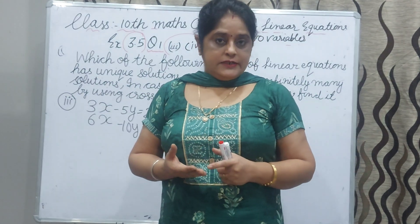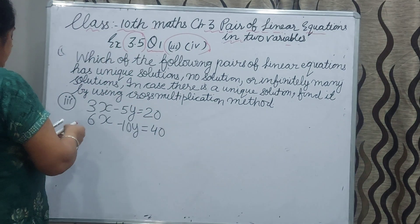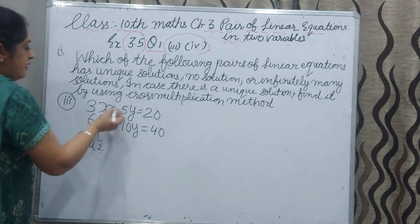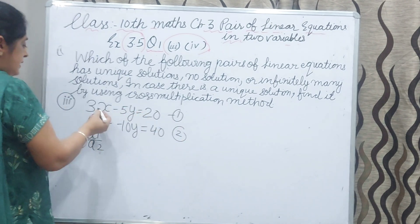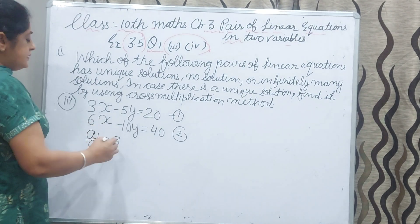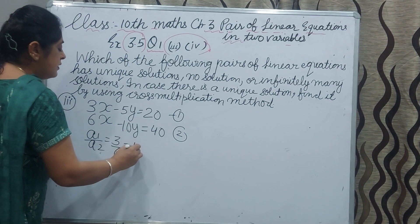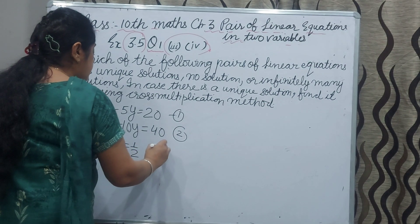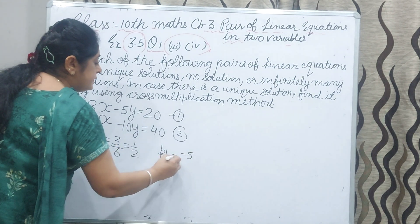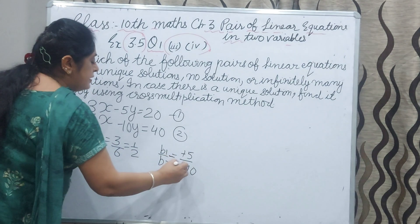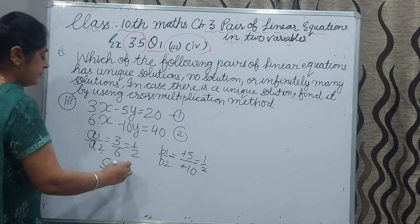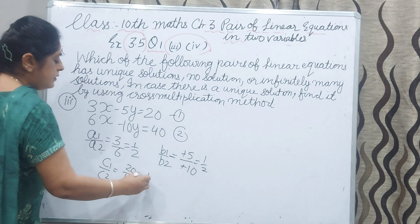So we have to compare their coefficients. a1 by a2: the first equation coefficient of x is 3, and the second equation coefficient of x is 6, which reduces to 1 by 2. Now b1 by b2: coefficient of y is minus 5 and minus 10, which also reduces to 1 by 2. Now c1 by c2: 20 upon 40, which reduces to 1 by 2.